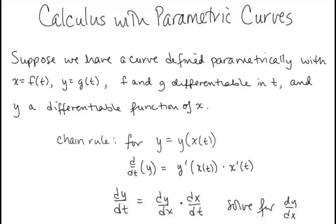Suppose we have a curve defined parametrically with x equals f of t, y equals g of t, where f and g are differentiable in t, and y is a differentiable function of x. Since y is a differentiable function of x, we know that we have a smooth curve in the xy plane, and we can talk about the slope of the curve at any point.